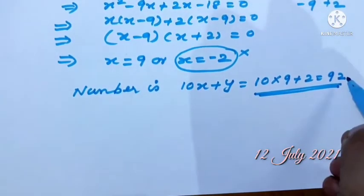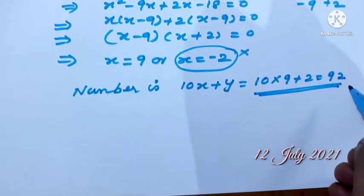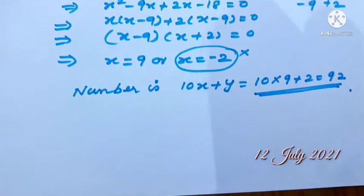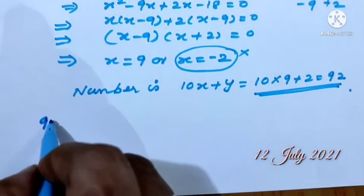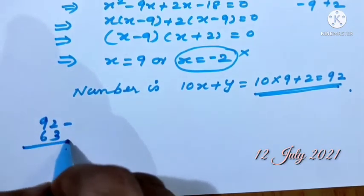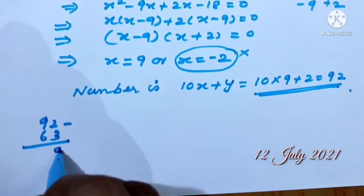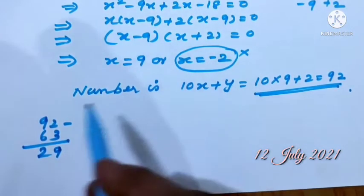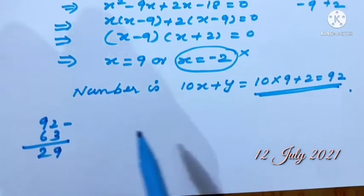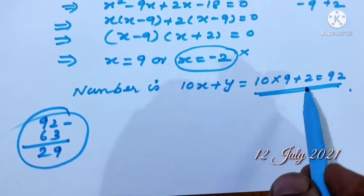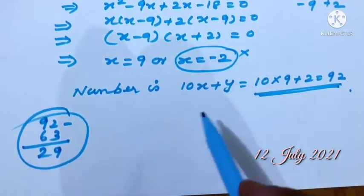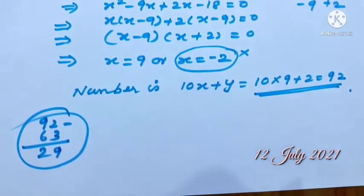We can verify: 92 minus 63 equals 29. The digits are interchanged — 92 becomes 29. This confirms our answer is correct. You can always check your steps this way.